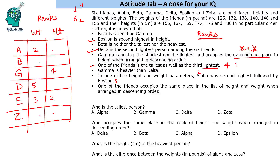We need to find the person who is the tallest and the third lightest — that is height rank 1 and weight rank 4. Beta is neither the tallest nor the heaviest, so Beta cannot be that person. Therefore, Zeta gets height rank 1 and weight rank 4. This part is done.